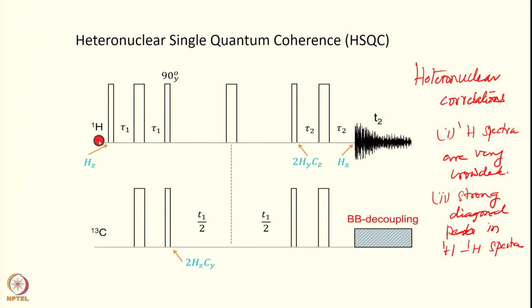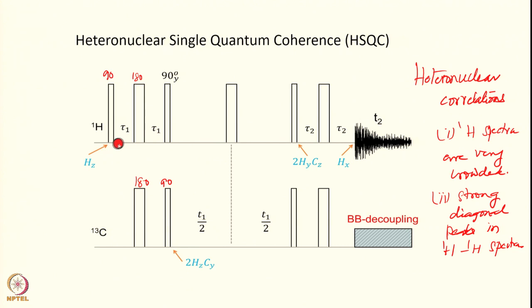So, how does this experiment work? We start with the proton magnetization, represented as HZ, and this sequence is what we have seen before — this is called the INEPT sequence. You have proton magnetization: 90, tau, 180, tau, and there is a 180 on the external channel as well. We write it as 180 and this is also 90. So this is called the INEPT experiment. During this period the proton is transferred from the Z magnetization, it comes to the transverse magnetization, and this will evolve during this period with the coupling to the X nucleus — the carbon-13 proton coupling. From here, these two 90-degree pulses transfer the magnetization to the carbon. This is the INEPT sequence.